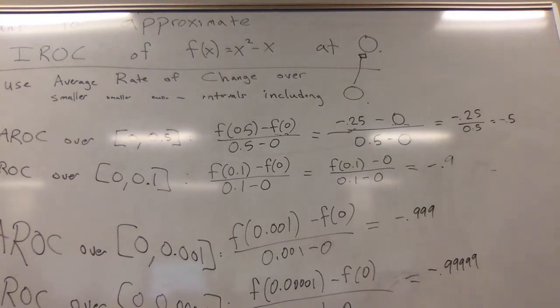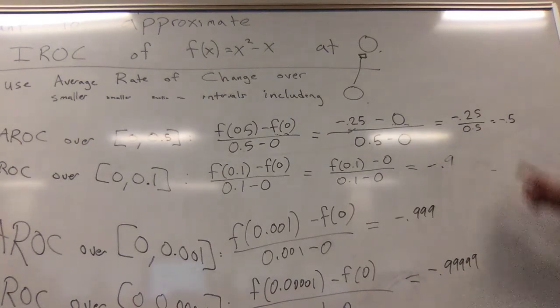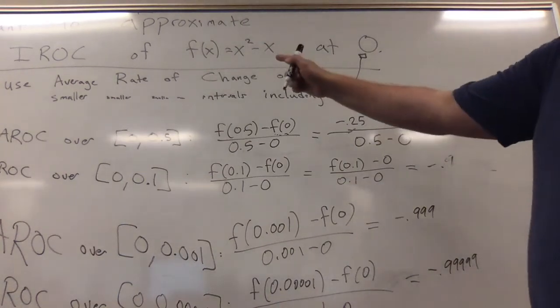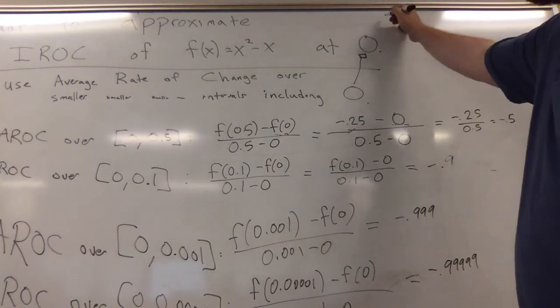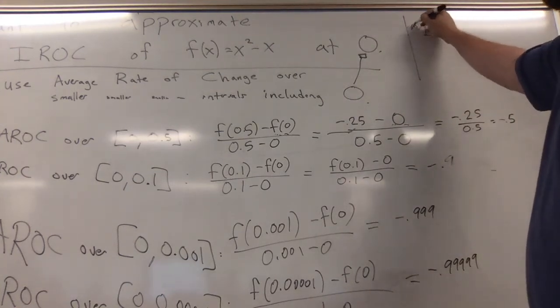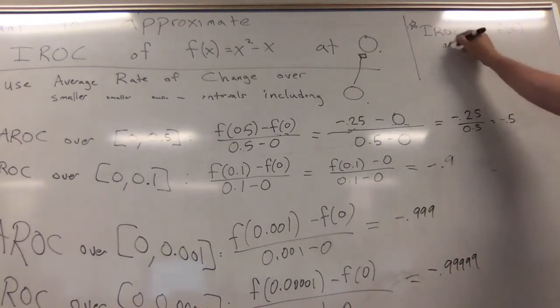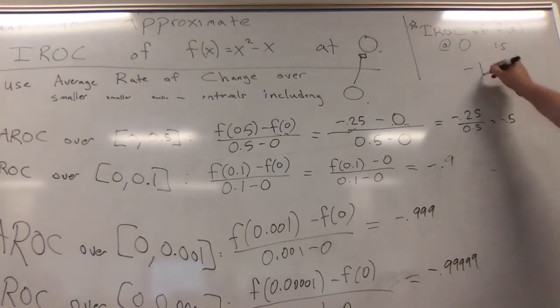Do not say this is approximately negative 0.9999. There's a clear trend in terms of where your values are going. Where do you think this is headed as we get tighter and tighter? Negative 1. So we want to approximate this, and our approximation suggests that the average rate of change of f(x) at 0 is negative 1. You're allowed to guess what you think the exact value is, especially when you see a trend that's this clear.